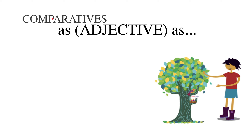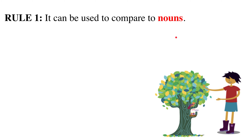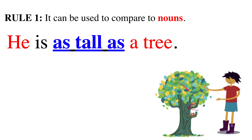Today we'll be presenting on comparatives and using 'as adjective as' to compare two different things. There'll be five rules that we'll be looking at. The first rule is that it can be used to compare nouns. For example, looking at this picture on the lower right corner, we can see that he is as tall as a tree, meaning he's the same height as the tree.